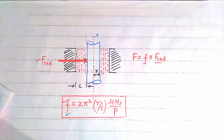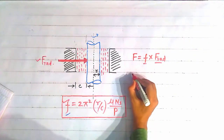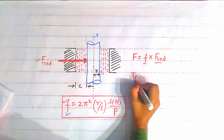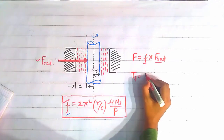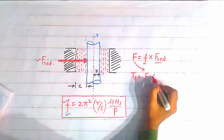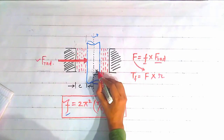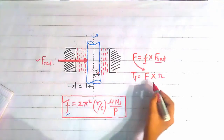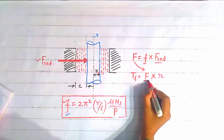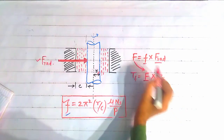The frictional torque acting on the surface of the shaft, denoted by T_F, is equal to the frictional force multiplied by the radius of the journal R. So the frictional torque equals frictional force times the radius of the journal.